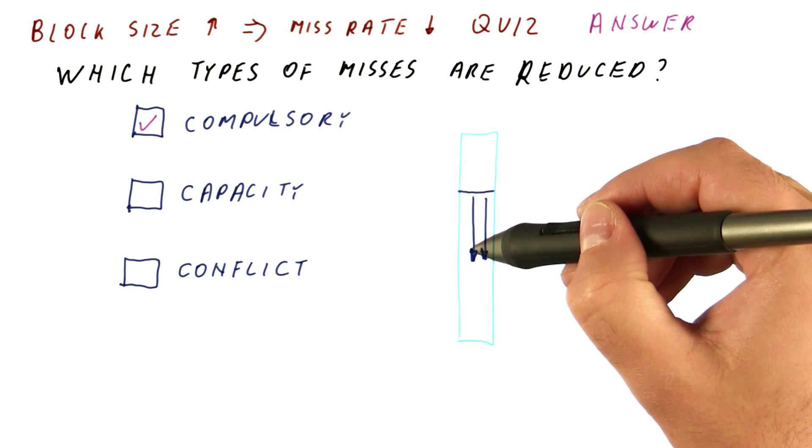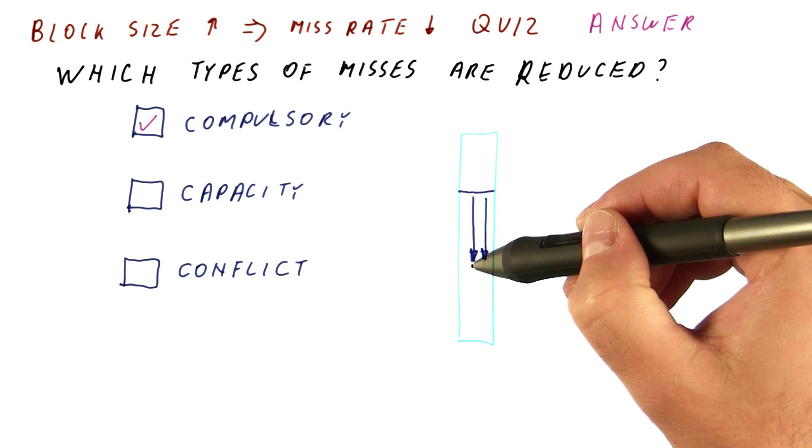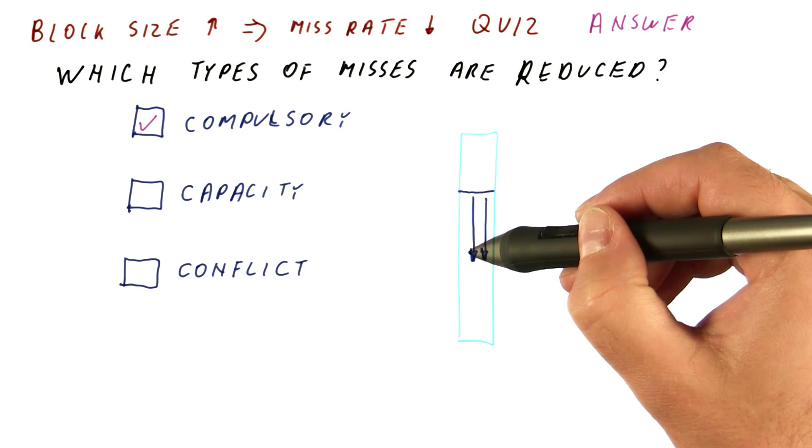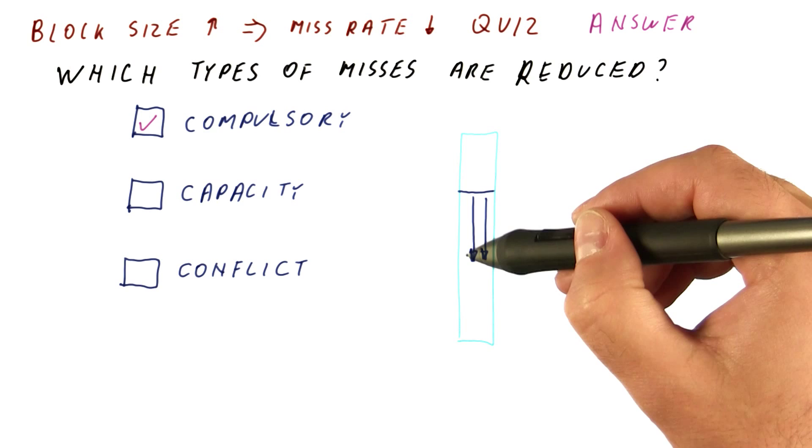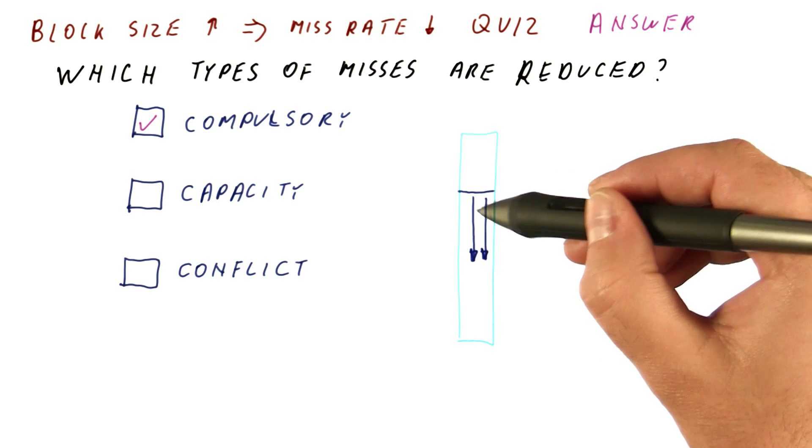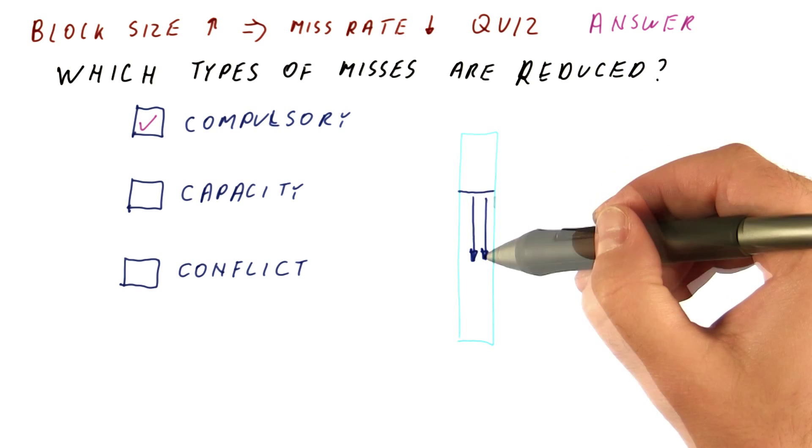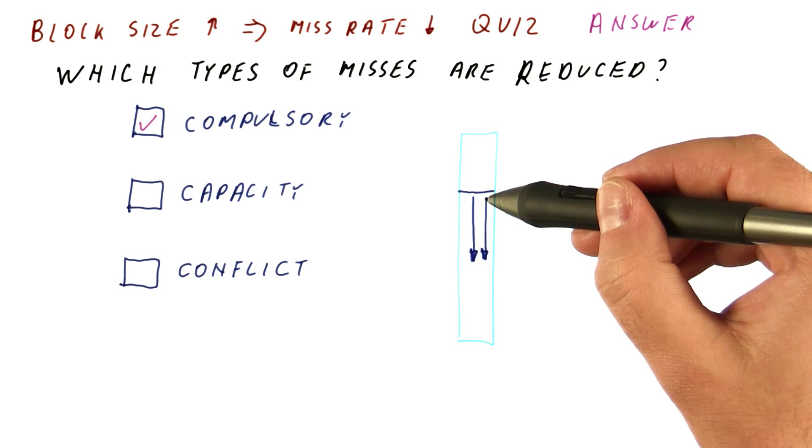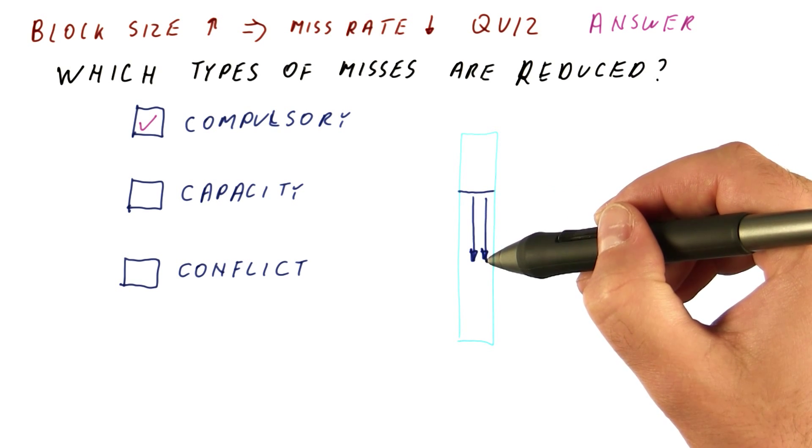The first set of accesses were compulsory misses, because these blocks were never in the cache. Because they don't fit in the cache, by the time we get to the end of the array, the beginning of the array is kicked out of the cache, and now we're suffering capacity misses. These blocks would be in an infinite cache. They're not in the cache because it was not large enough.